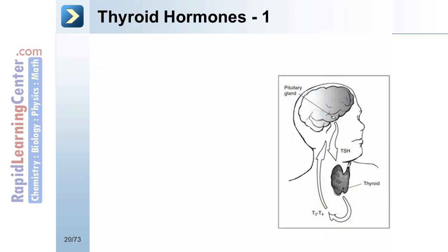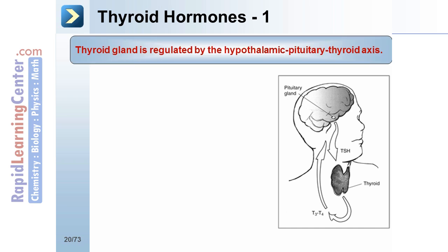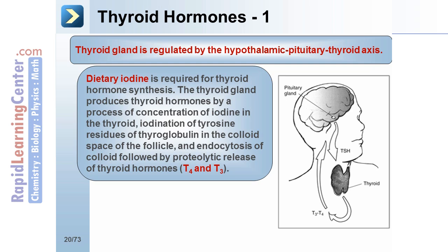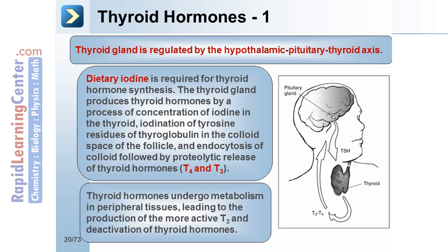The thyroid gland is regulated by the hypothalamic-pituitary-thyroid axis. Dietary iodine is required for thyroid hormone synthesis. The thyroid gland produces thyroid hormones through a process of concentration of iodine in the thyroid, iodination of tyrosine residues of thyroglobulin in the colloid space of the follicle, and endocytosis of colloid followed by proteolytic release of thyroid hormones T4 and T3.